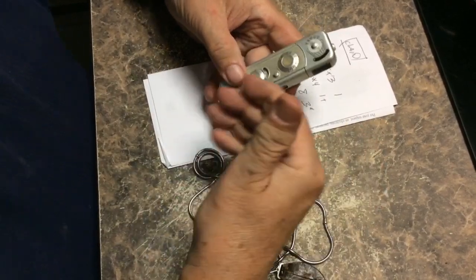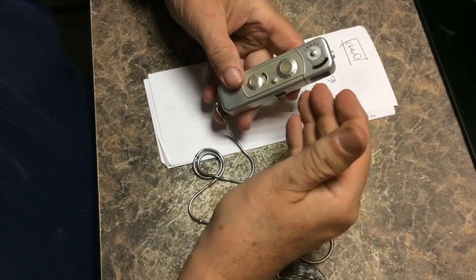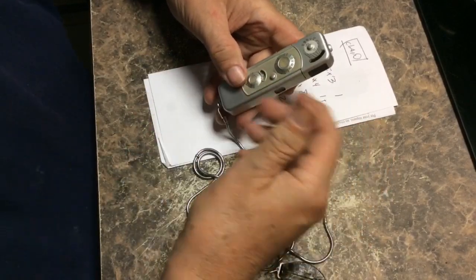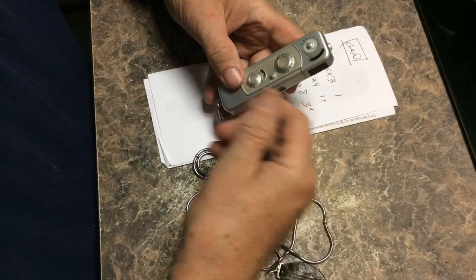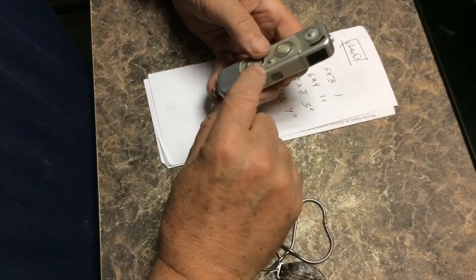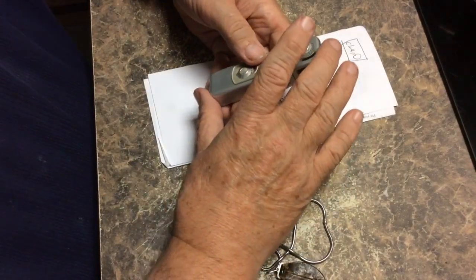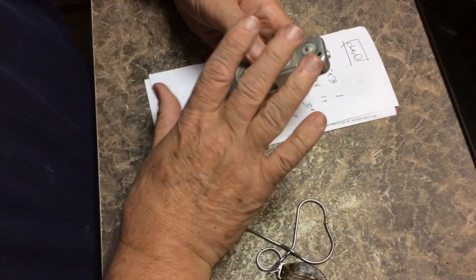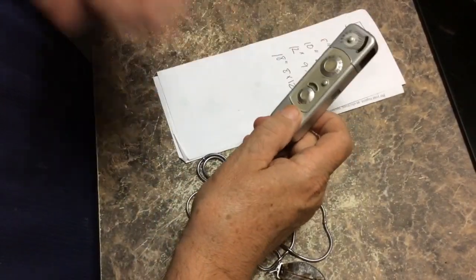You have to estimate focus distances. There's no rangefinder in it. You don't look through the lens and see it being focused, because in the interest of making this camera small, all of that had to not be in the camera.